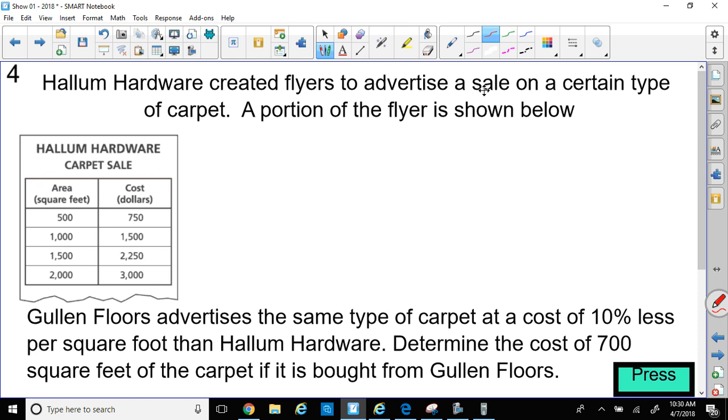Here's my last question for today. Hallum Hardware creates flyers to advertise a sale on a certain type of carpet. A portion of the flyer is shown below. So here's a flyer showing the area in square feet of the carpet and that's how much it costs in dollars. Now they have a little bit more down here. Gullen Floors advertises the same type of carpet at a cost of 10% less per square foot. So there's a discount at the other place, a 10% discount, 10% less than Hallum Hardware. So these guys are going to be a little bit lower by 10%.